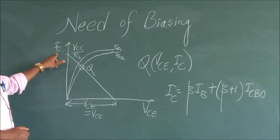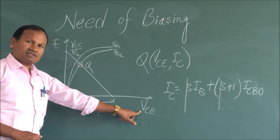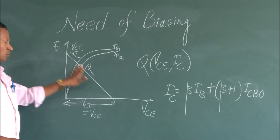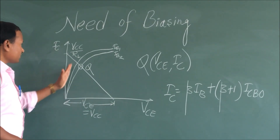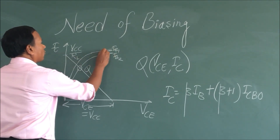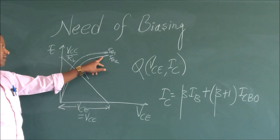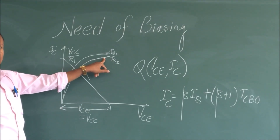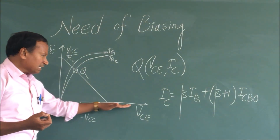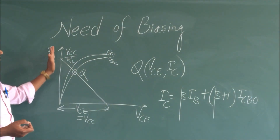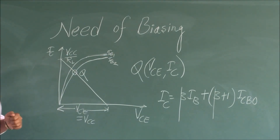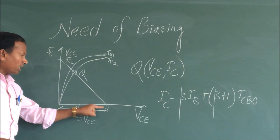When we see the output characteristic of a transistor, VCE is on the x-axis and IC is on the y-axis. We plot IC versus VCE — this is the output characteristic. For a single characteristic, IB is kept at a constant level, then we increase VCE and we get IC, which we call as the output characteristic of the transistor. Then there is another thing which we call as the load line.